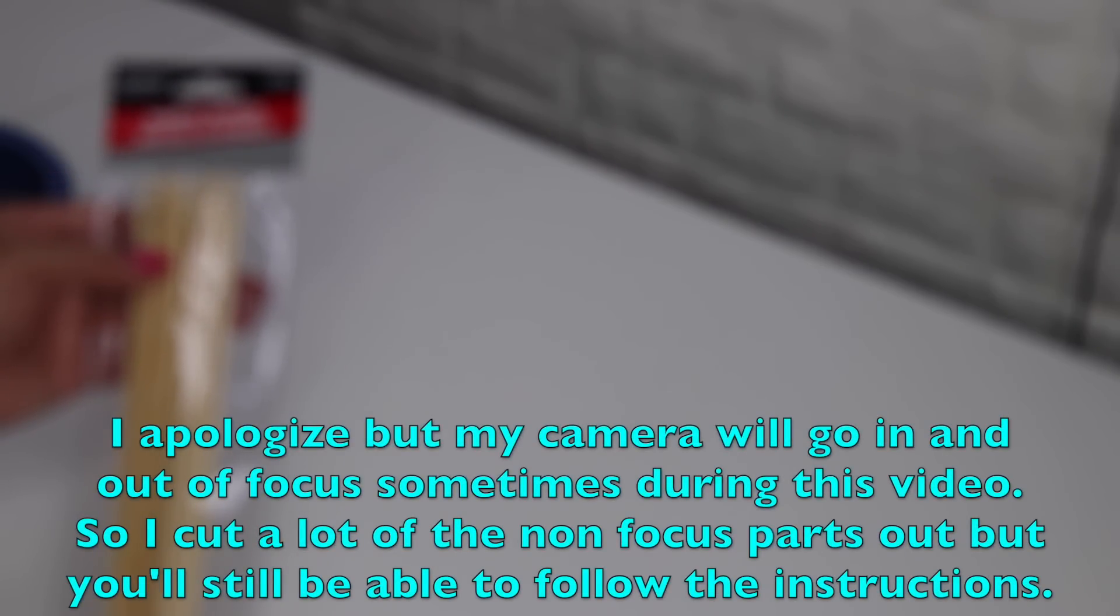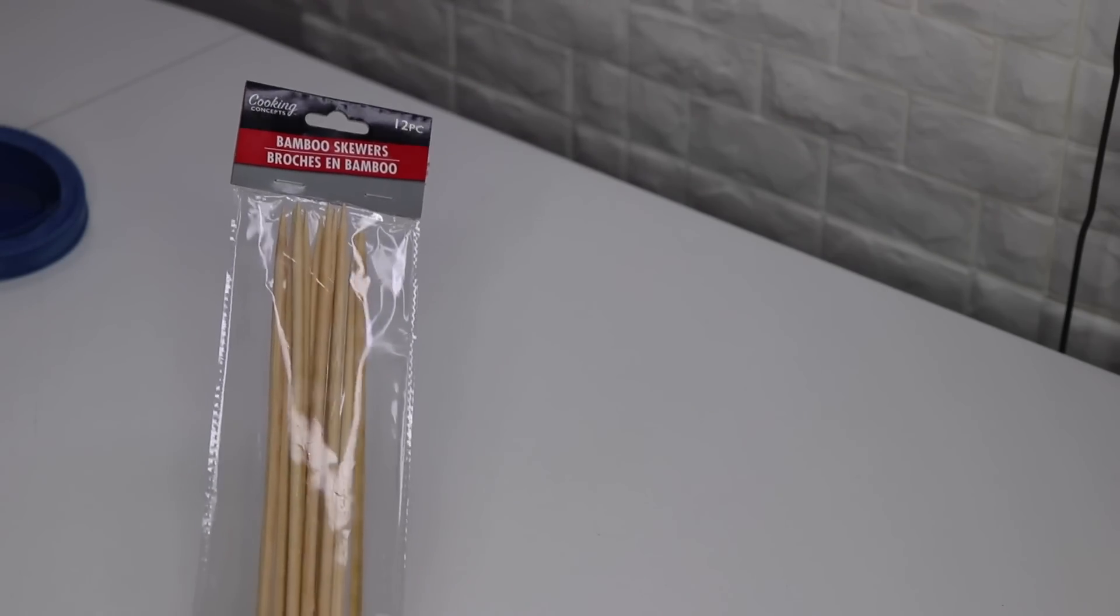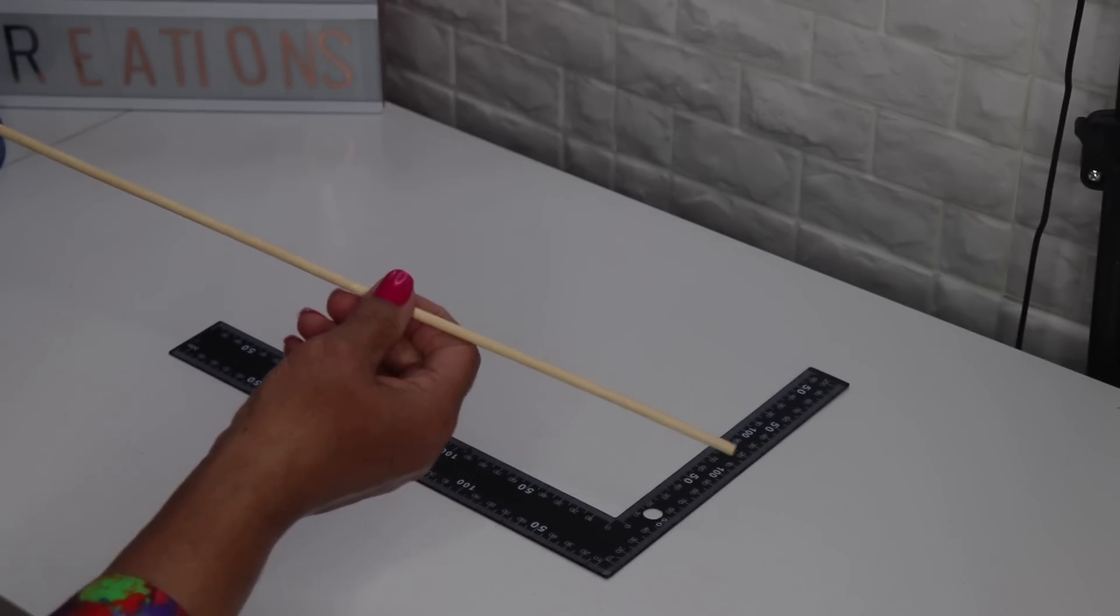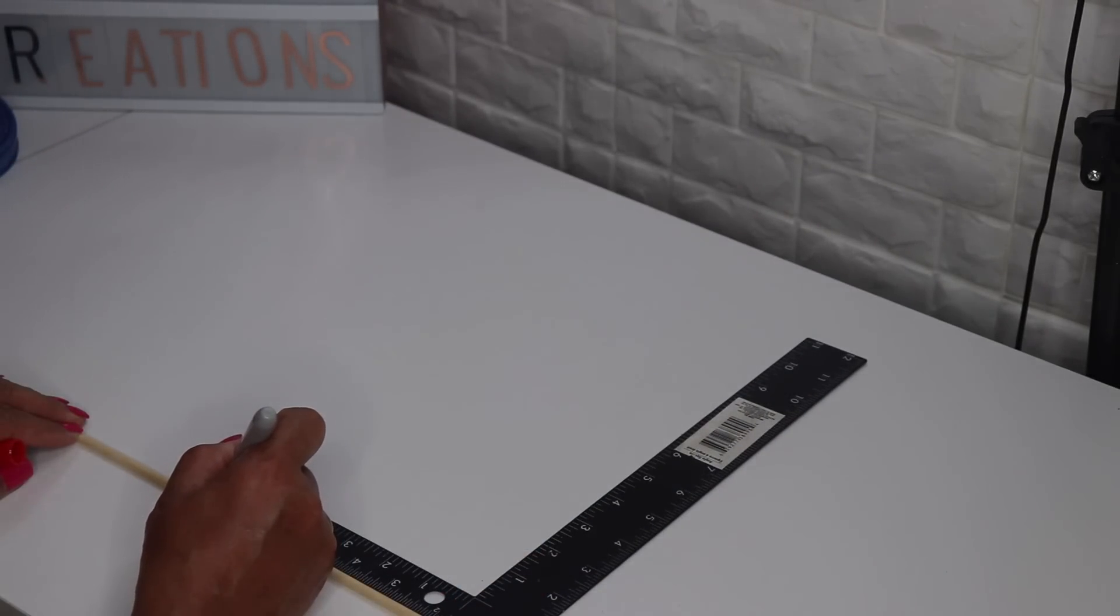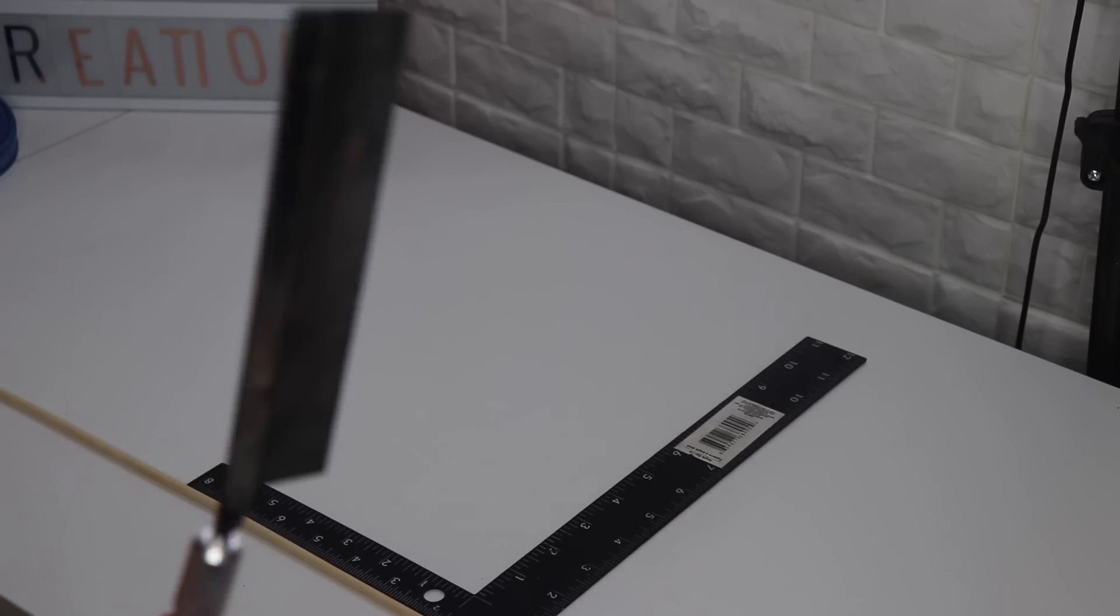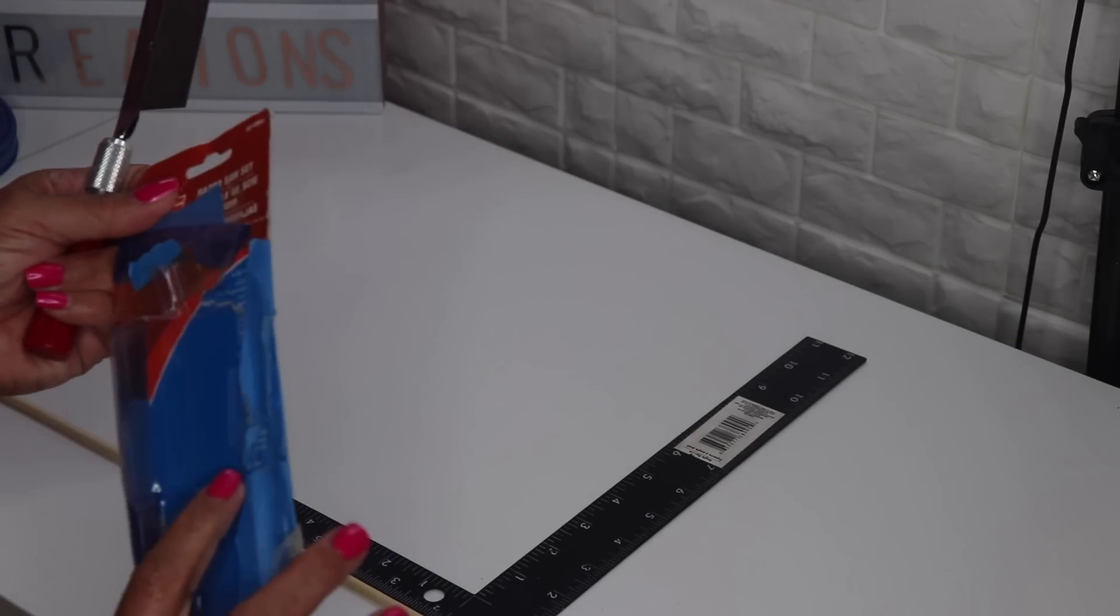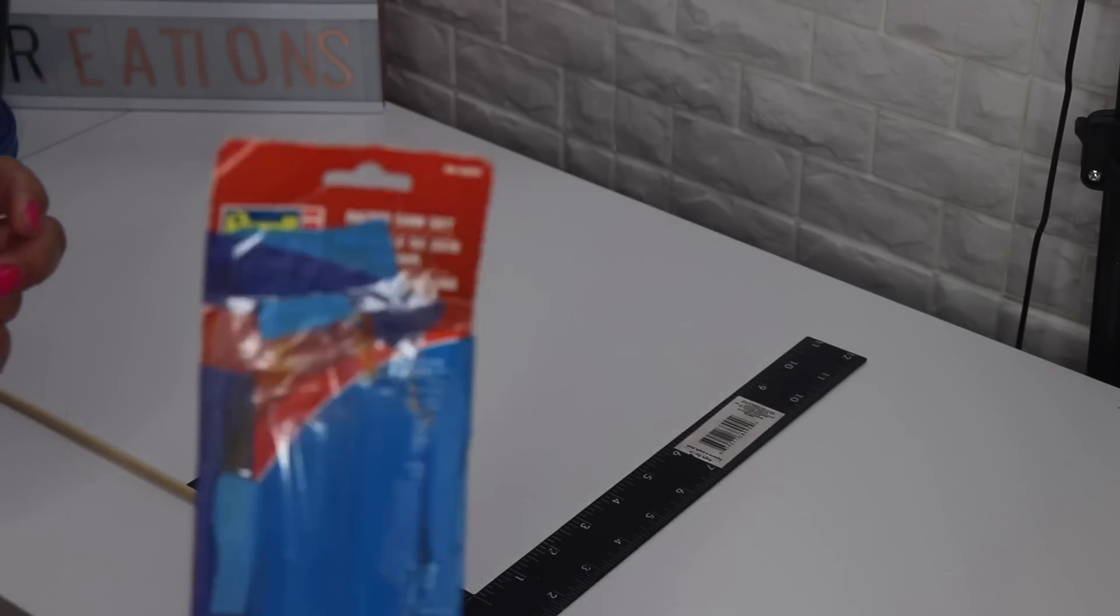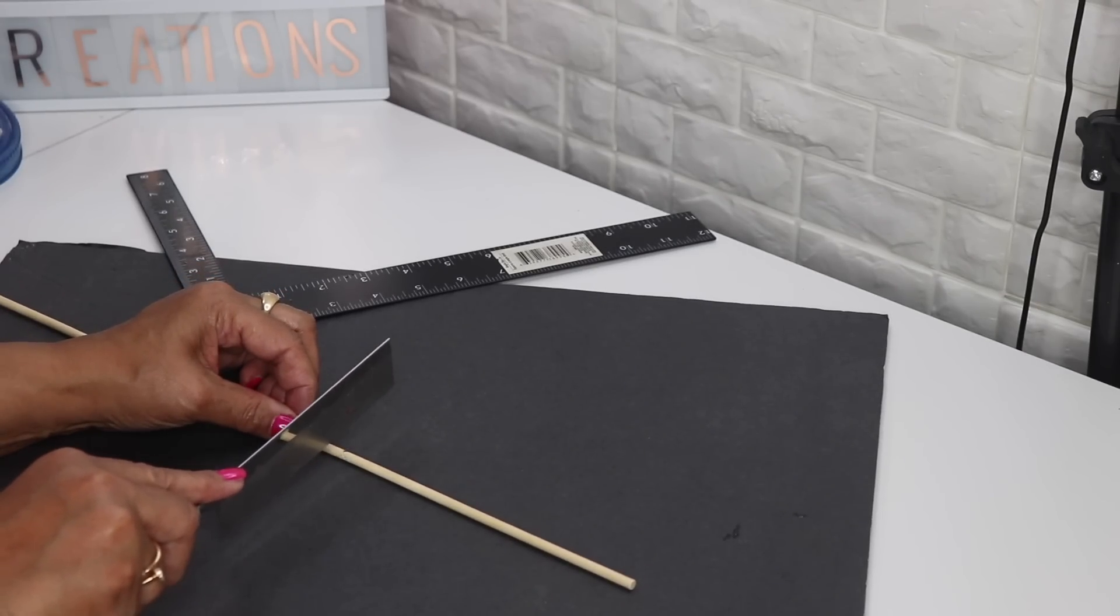Next up I have these bamboo skewers from Dollar Tree and these things are really really long, super super long. I took one out of the package and I want to cut seven inches off. I'm going to cut it with this blade. It's called a razor saw set. Just cut right on the dot.